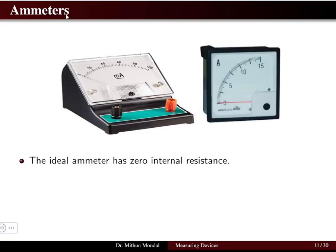Welcome to the next lecture in electric circuit analysis. We were discussing measuring devices, and in the last lecture we discussed ohmmeters. In this lecture we will focus on ammeters. Ammeters are used to measure current — current can be large or very small. If small, we use milliammeters or microamperes; if large, we use amperes. Ideally, the ammeter has zero internal resistance so that no voltage drop occurs and the full current flows through the ammeter circuit.